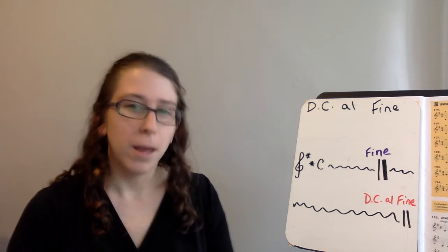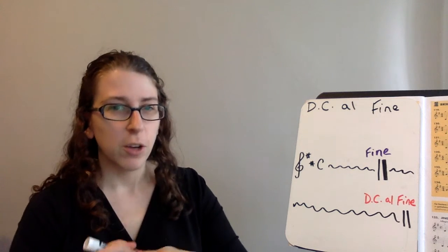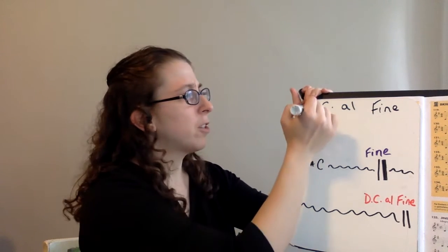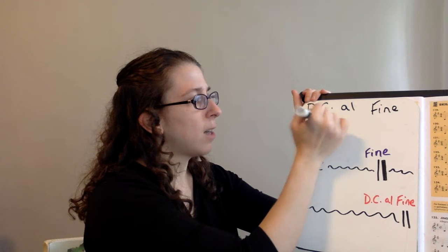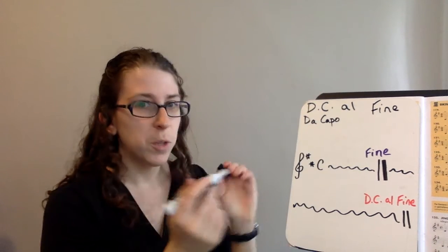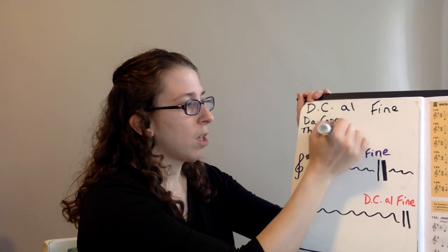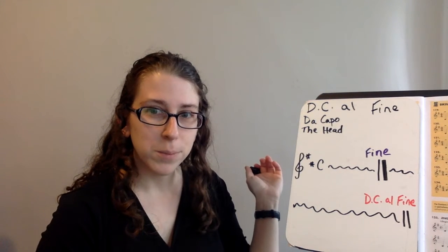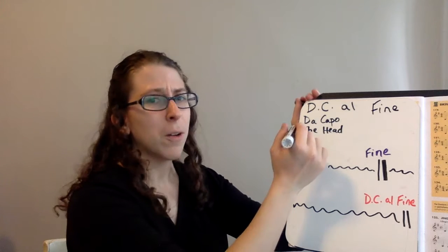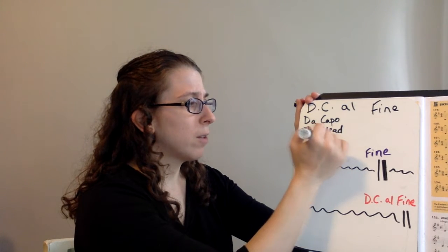But in Italian and for music. So DC is an abbreviation. The Italian is da capo, which means the head. Literal translation. What it means in music is go to the beginning. Go to the start.